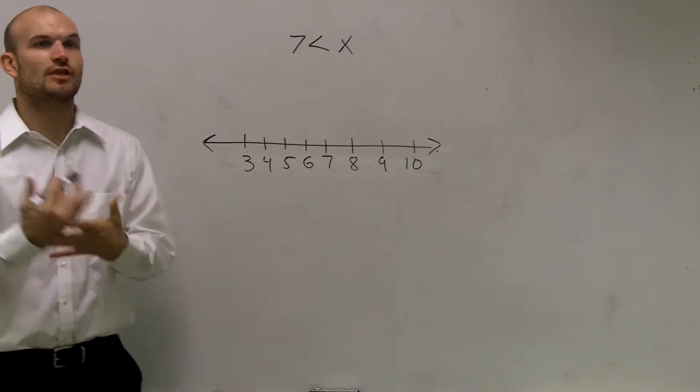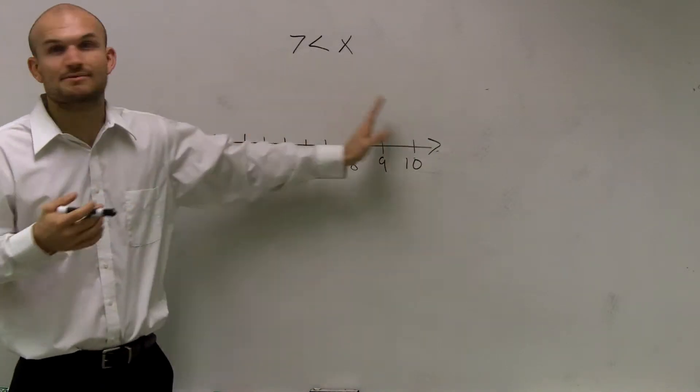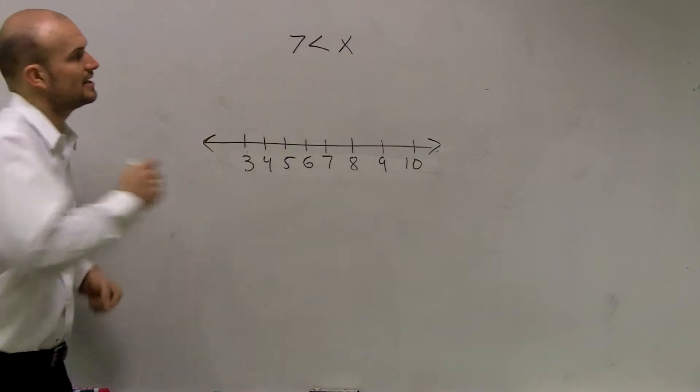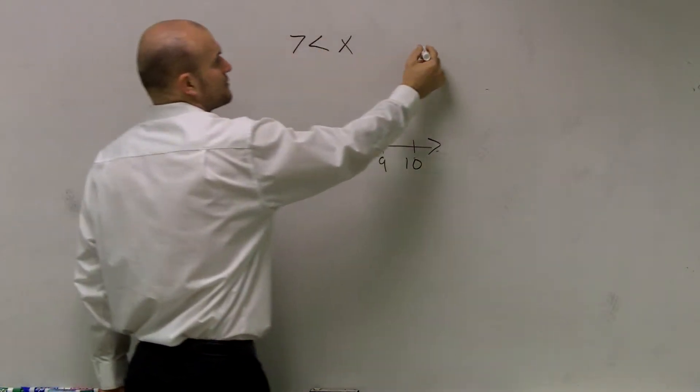However, guys, if you want to follow that rule, the only time your inequality goes the same direction as your inequality sign is when your variable is to the left. So therefore, what you'd have to do is you'd have to rewrite this.